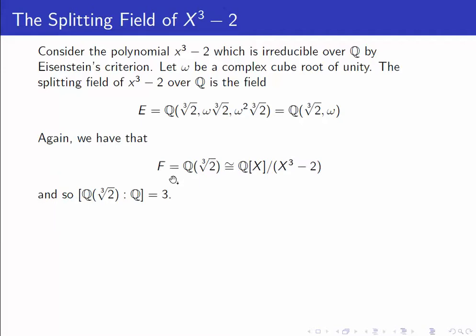Again, we have that the field generated by the real cube root of 2, which I'll call F, is isomorphic to Q of x over x cubed minus 2. And so the degree of this extension is 3.